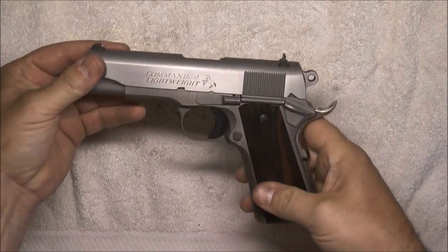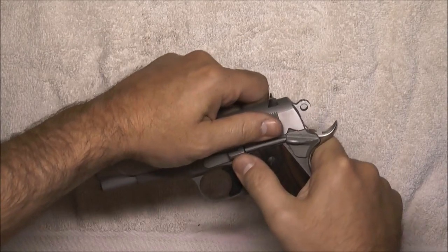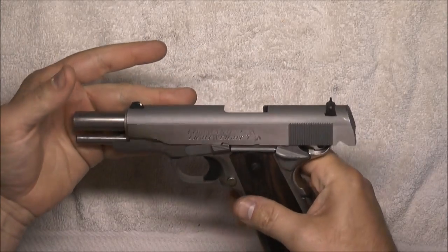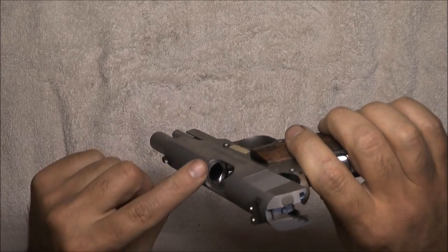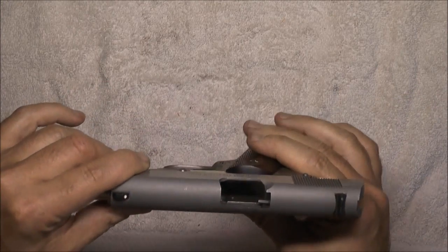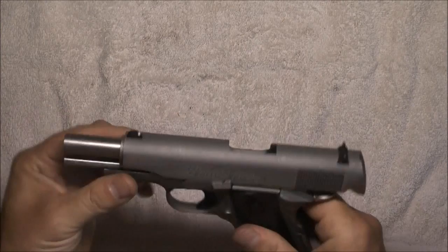Let's get started and we'll do a safety check first. Lock your slide back, take a peek in, make sure there is no round chambered. We've got no round chambered, we've got nothing in the magazine well, so we have a clear gun.